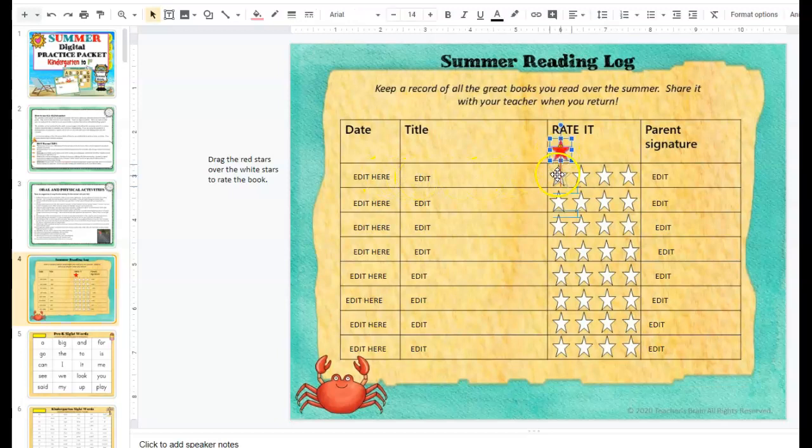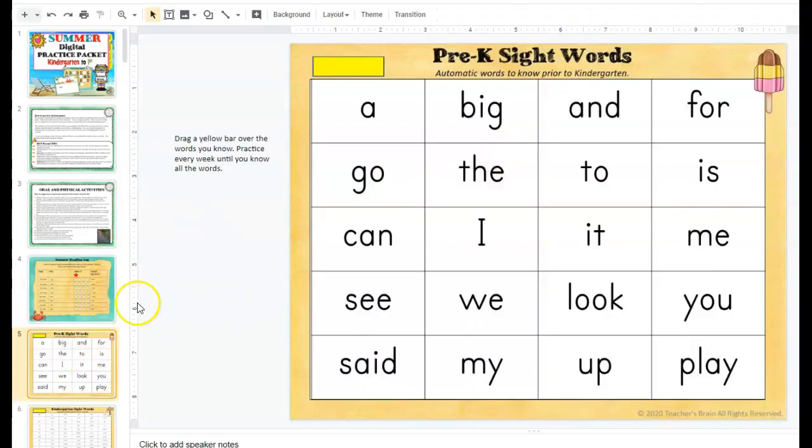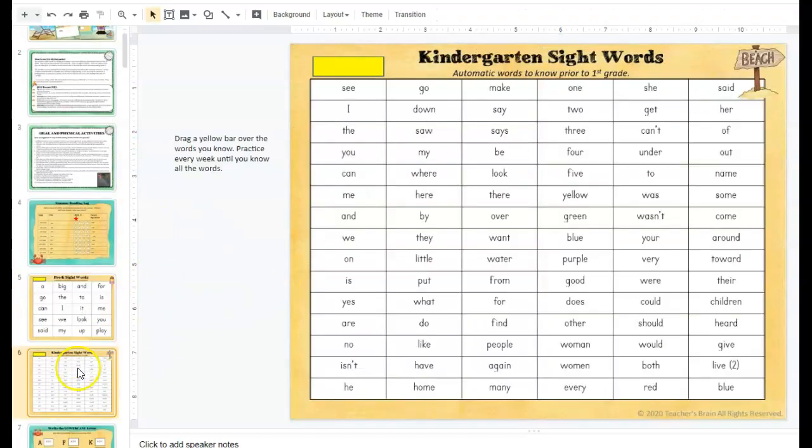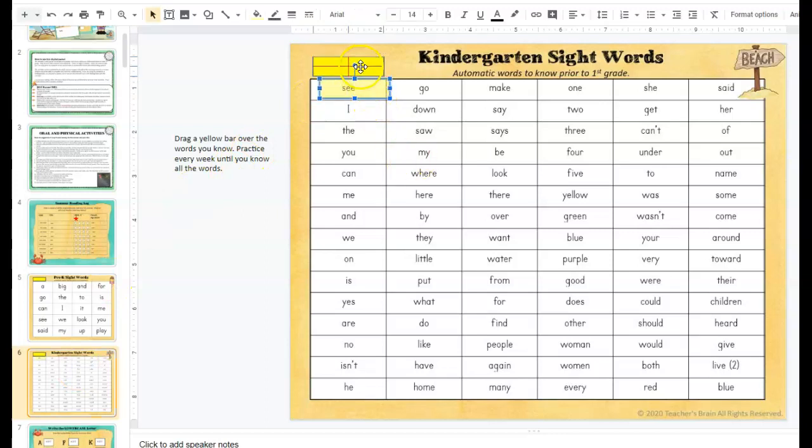and drag a star over to rate each one. Also you'll find pre-K sight words and kindergarten sight words. Once they read it, if they know the word they just highlight it with one of these categories. Again you've got directions